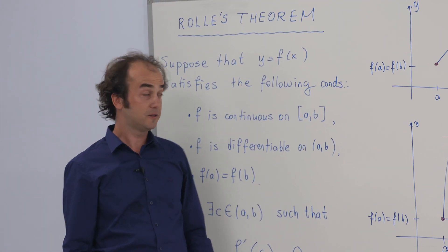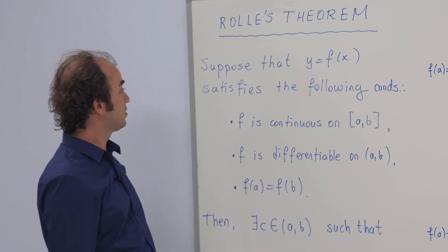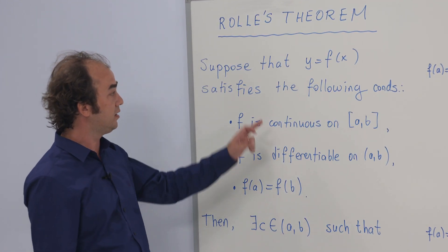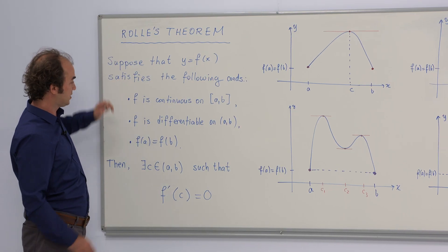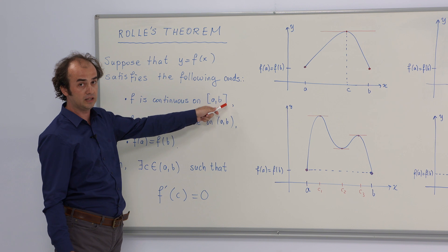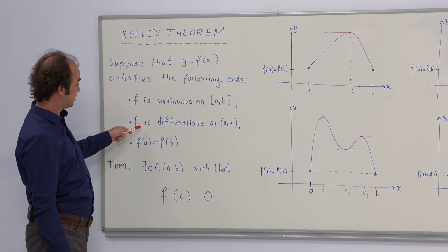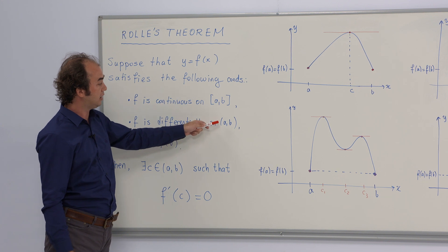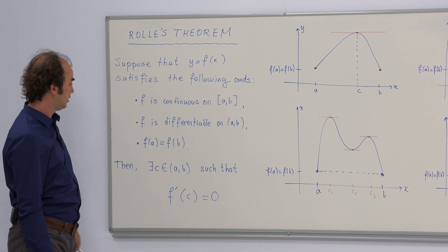Let's start by giving the statement of the theorem. The theorem says that suppose f of x is a function satisfying these three conditions. The first one is f is a continuous function over the closed interval a, b. The second condition is f is a differentiable function on the open interval a, b.